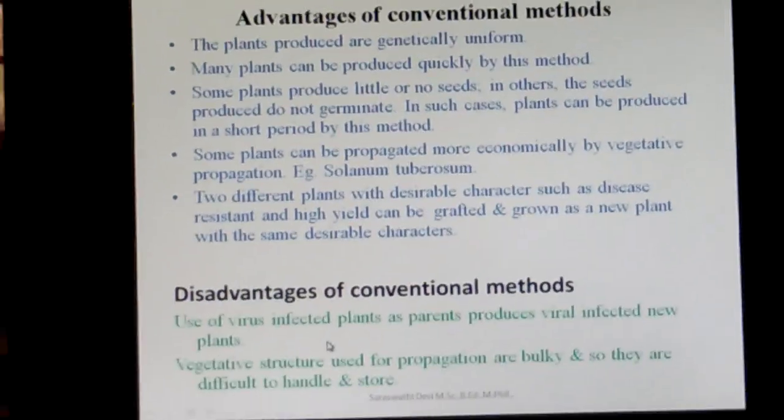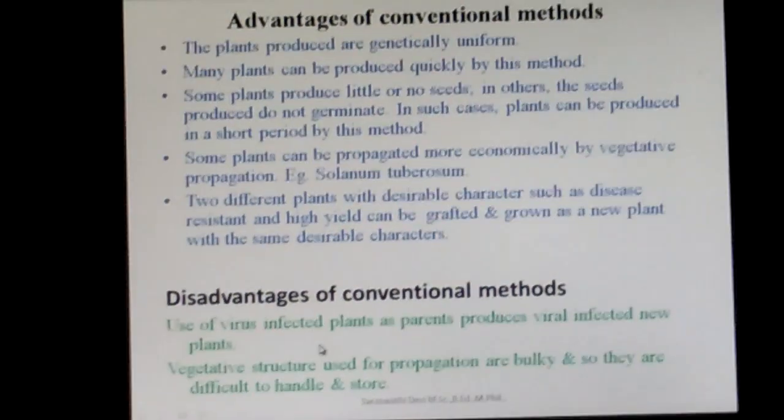In the next class we can continue. In today's class we have seen the topic of reproduction and its types. Asexual reproduction was divided into natural and artificial methods, and we studied those types. About sexual reproduction in angiosperms, we will see in the next class.